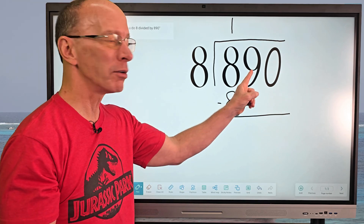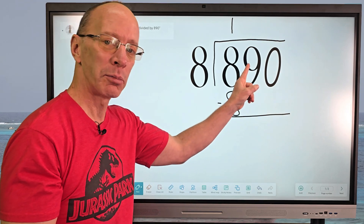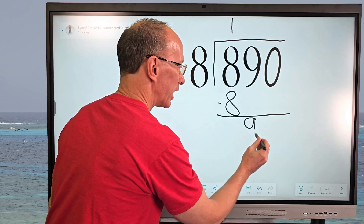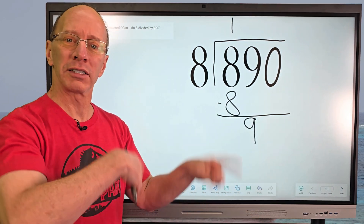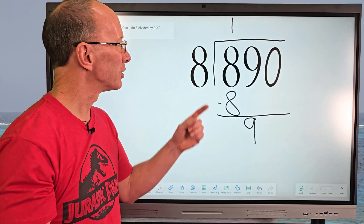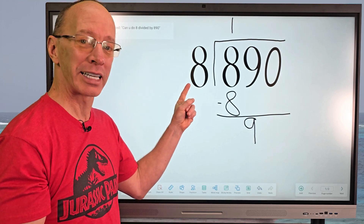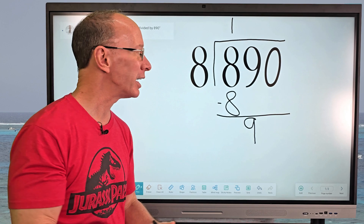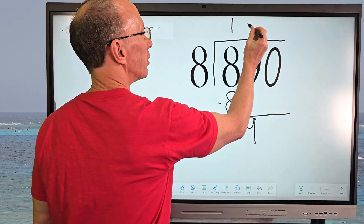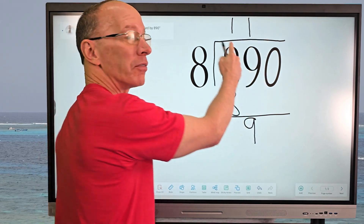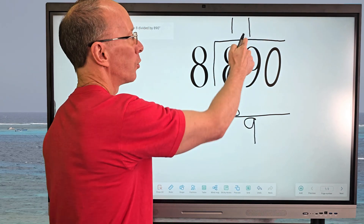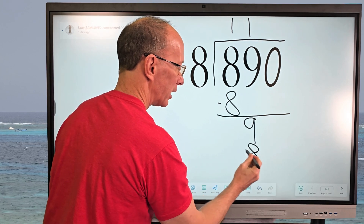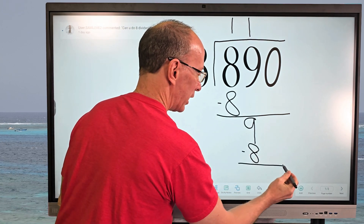Now our next step is to bring the next number down, which is the 9 — we bring it straight down right here. Now we start the whole process over. How many times can I put 8 into 9? One time. So I put the 1 right here, right above that 9. 1 times 8 equals 8.